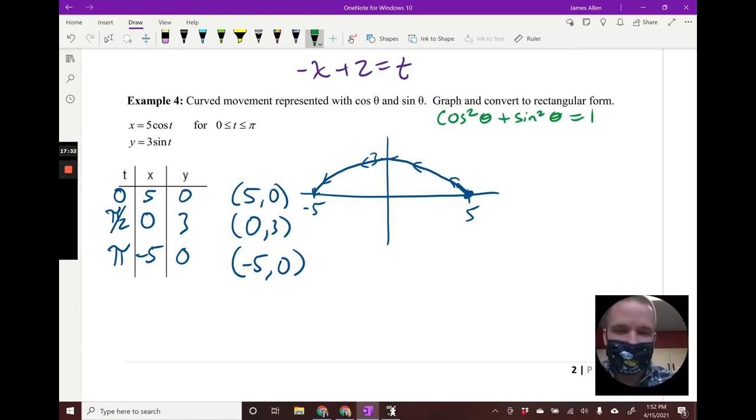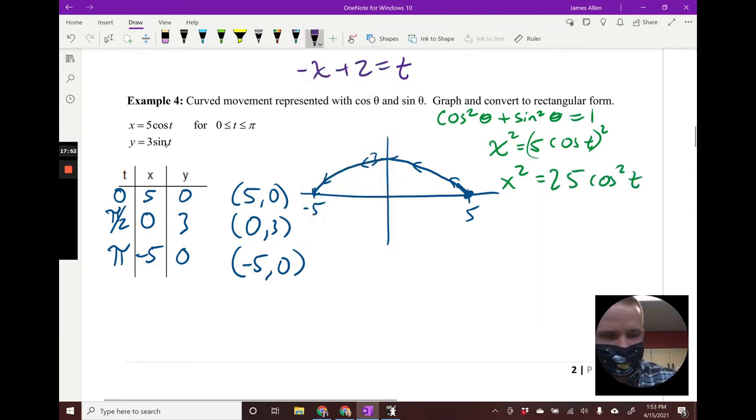So let's go ahead. I'm going to take x equals five cosine t and square both sides, so I get x squared equals 25 cosine squared t. I'm going to do the same thing for y. Y equals three sine t, square both sides, and I get y squared equals nine sine squared t.